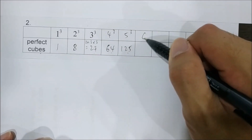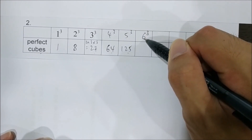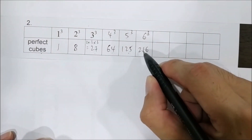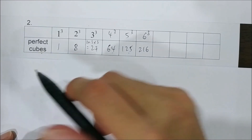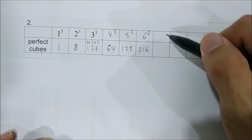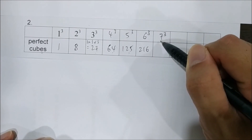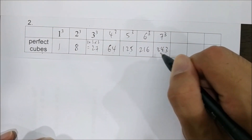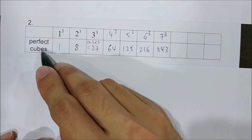For example, 6 is a whole number. When we cube 6, we get 216, so 216 is called a perfect cube. Again, 7 is a whole number; when we cube 7, we get 343, so 343 is also called a perfect cube.